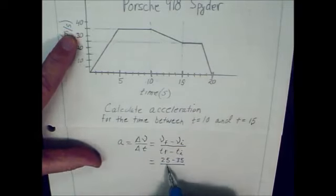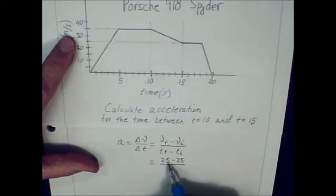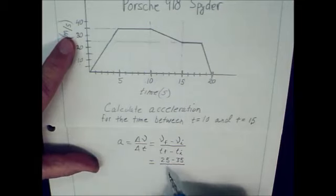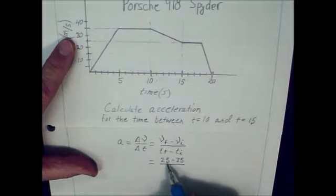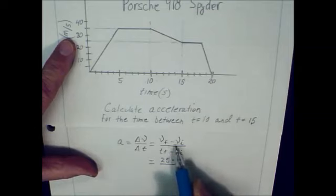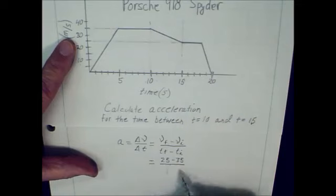The initial velocity was up here at 35 meters per second. I can begin to smell a fish already. I'll tell you what I mean by that. In this case, our final velocity is less than our initial velocity. So you have to write these in the right order in order to get the right result.